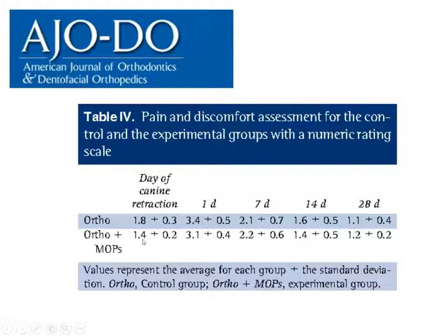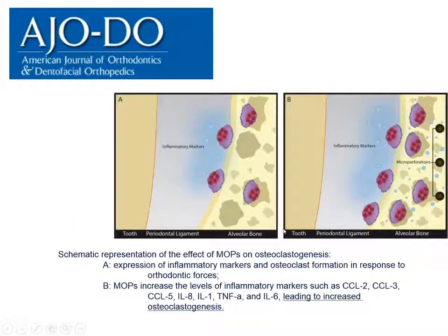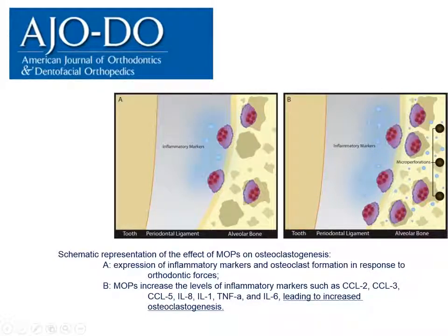Pain reported by patients on the experimental side versus the control side showed really no difference from one day to a week to two to four weeks. The schematic shows that normal orthodontic tooth movement produces a baseline expression of inflammatory markers, but when you perforate around the teeth you get an increase in osteoclastogenesis due to the increase in inflammatory markers present.